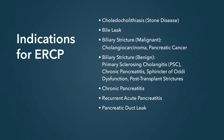Biliary strictures are another common indication for ERCP. Strictures can be malignant, such as a cholangiocarcinoma or pancreatic cancer, or they can be benign, such as primary sclerosing cholangitis, chronic pancreatitis, or post-transplant strictures. Sphincter of Oddi dysfunction is another less common indication, but benign papillary stenosis can be seen and is easily treated with ERCP and biliary sphincterotomy.